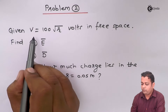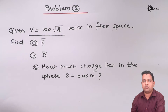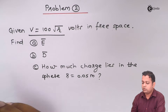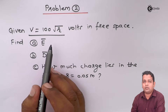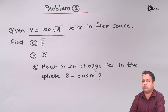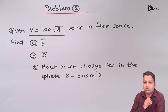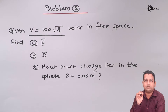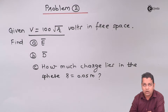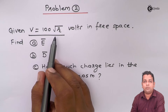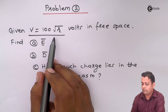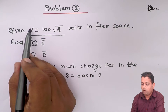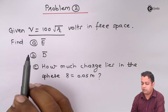We are given V is equal to 100 times the square root of R. As we encounter R, theta, phi, we can guess that this is a representation in the spherical coordinate system. In the earlier problem statement, the representation was directly in the form of rho, phi, z — that is cylindrical coordinates — but here we have the potential V represented in the spherical coordinate system.